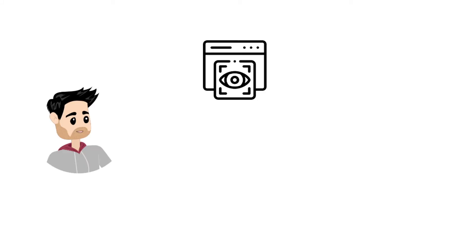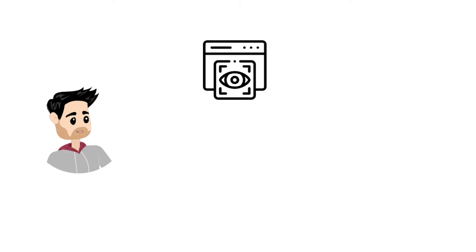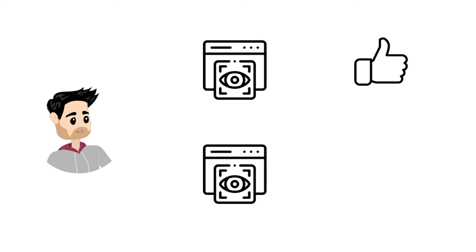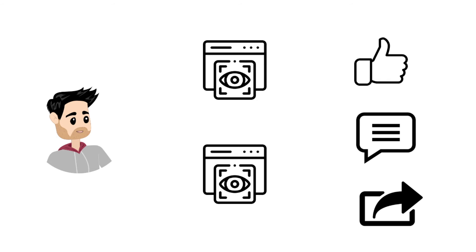So let's do an actual walkthrough of how this would work. You post something, and I'm connected with you on Facebook. I see it in the morning when you post it — I see it one time in my newsfeed, and when I see it, I like it. Then I come back later in the afternoon, and I happen to see that post again. When I see it for the second time, I add a comment, and then I share it.